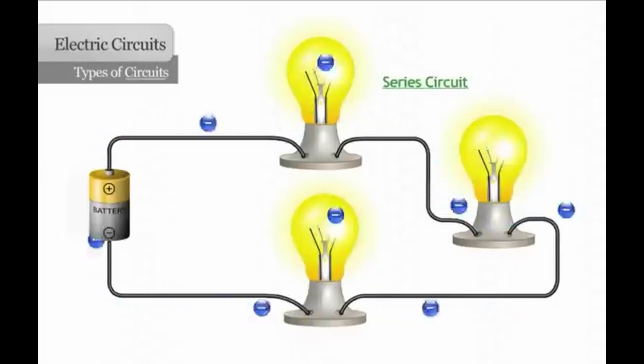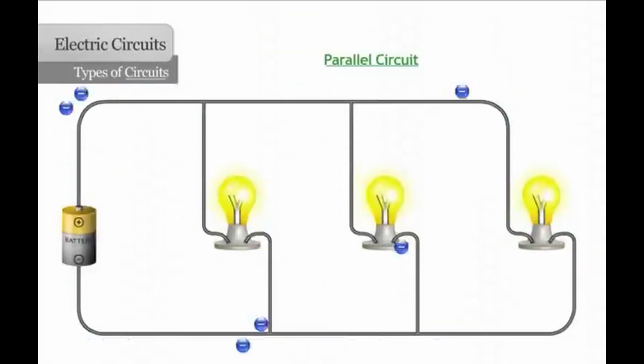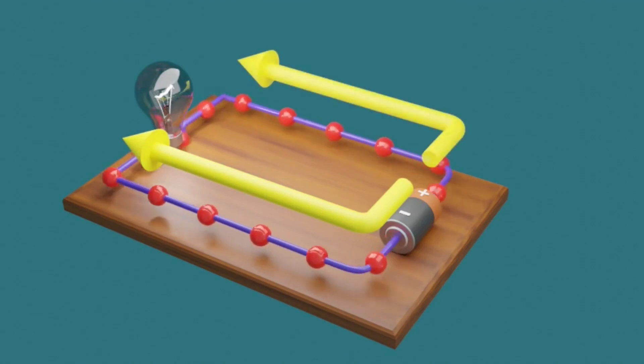When charged particles move through a closed-loop conductor known as a circuit, the net result is known as an electric current, characterized by the movement of electrons in the opposite direction of the conventional current, as established by Benjamin Franklin's convention.